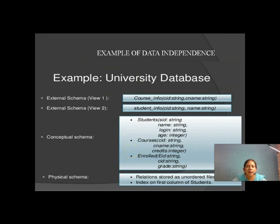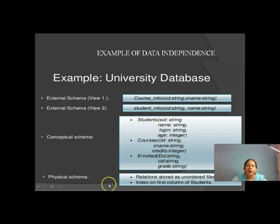An example of data independence: in a university database, we can see three levels — external schema with View 1 and View 2, conceptual schema, and physical schema. In the physical schema, relations are stored as unordered files, with an index on the first column of students. Since this is a university database, the data relates to students, faculty, and courses. So the physical schema shows databases stored in an ordered or unordered manner.